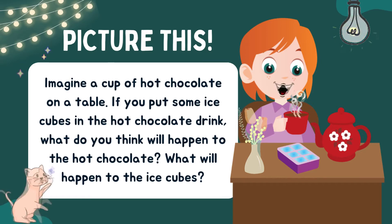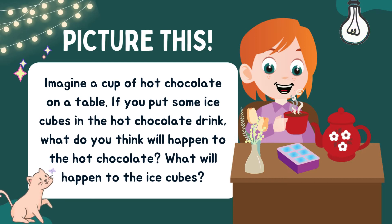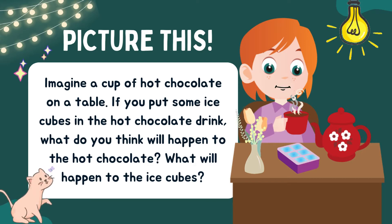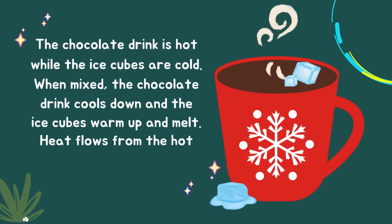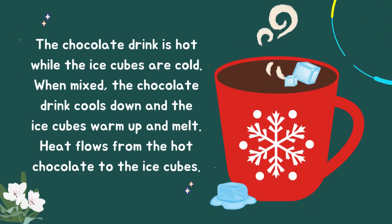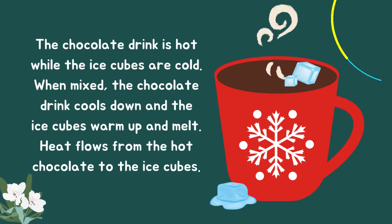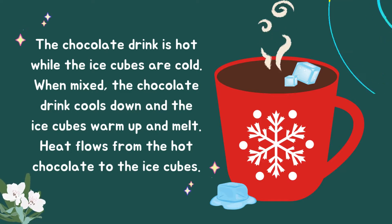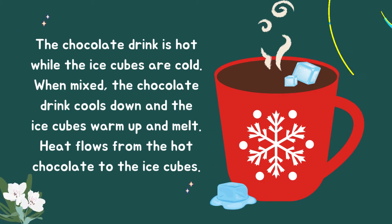Imagine a cup of hot chocolate on a table. If you put some ice cubes in the hot chocolate drink, what do you think will happen to the hot chocolate? What will happen to the ice cubes? The chocolate drink is hot while the ice cubes are cold. When mixed, the chocolate drink cools down and the ice cubes warm up and melt. Heat flows from the hot chocolate to the ice cubes.